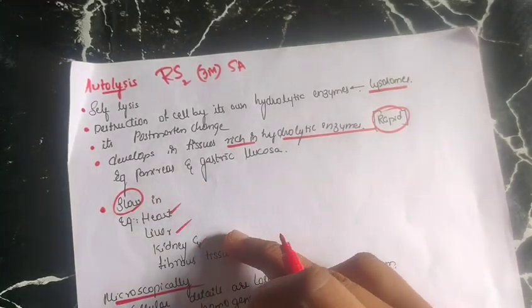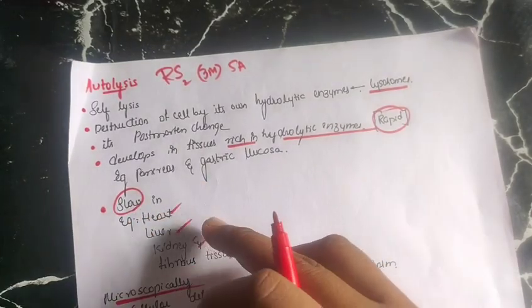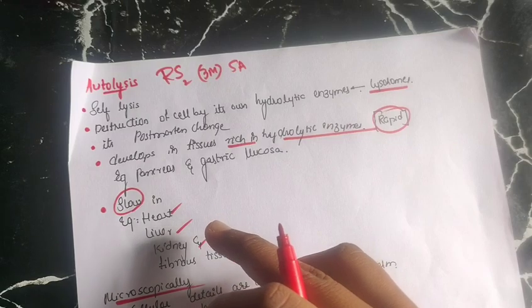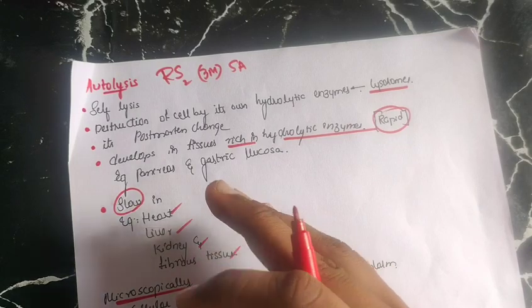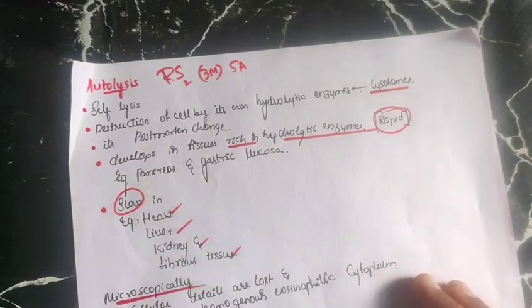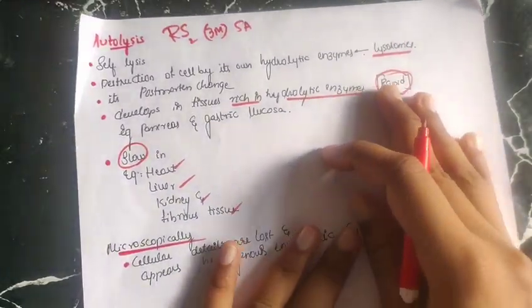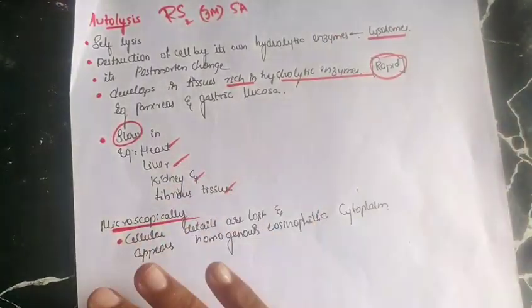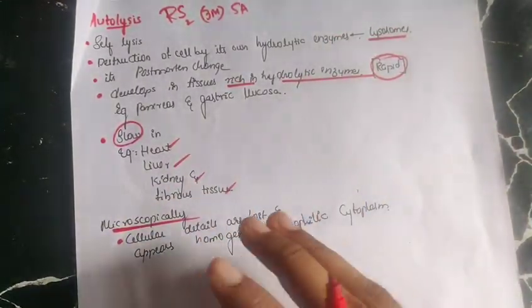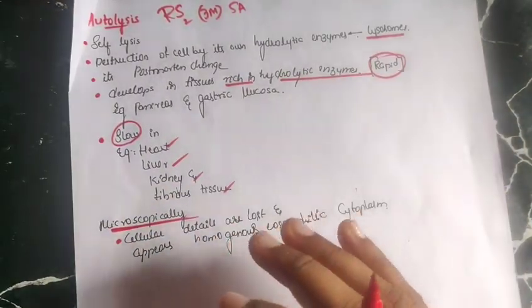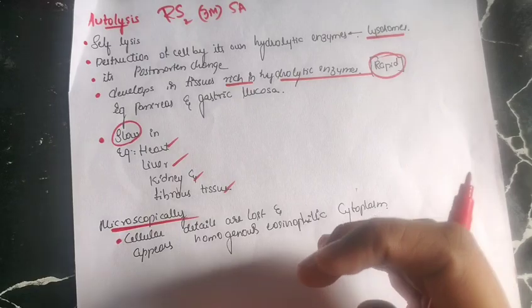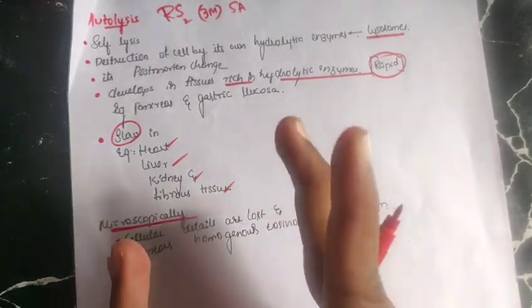In contrast, autolysis occurs slowly in tissues like the heart, liver, kidney, and fibrous tissue, because all of these contain fewer hydrolytic enzymes, so autolysis proceeds at a slower rate.